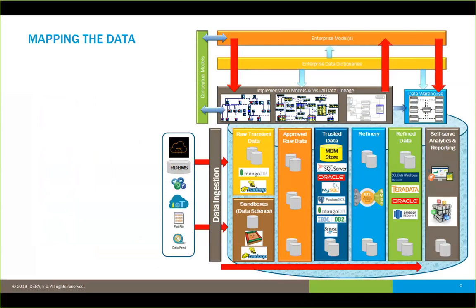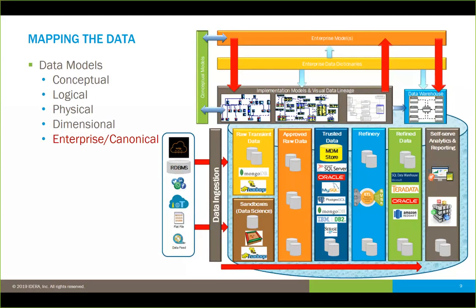We need to understand and map this data. The way to do that is through data models — enterprise models, enterprise data dictionaries, and linking our implementation models back to those. We're looking at conceptual models, logical models, physical models for physical implementations, dimensional models for data warehouses and data cubes, and very importantly the enterprise model and its derivative, the canonical model. We also want to understand data lineage — modeling visual data lineage and the traceability of information through the organization.